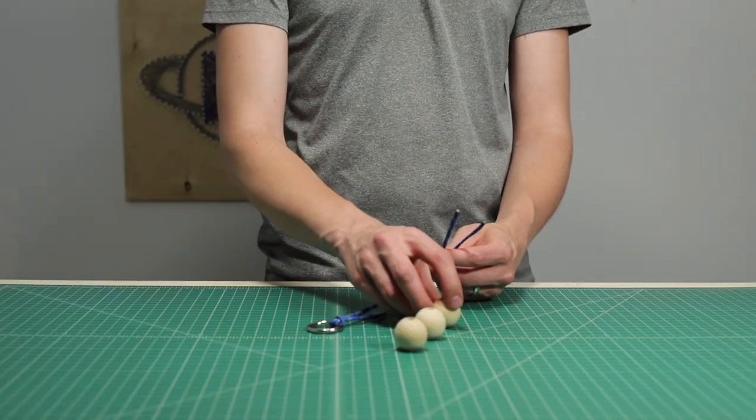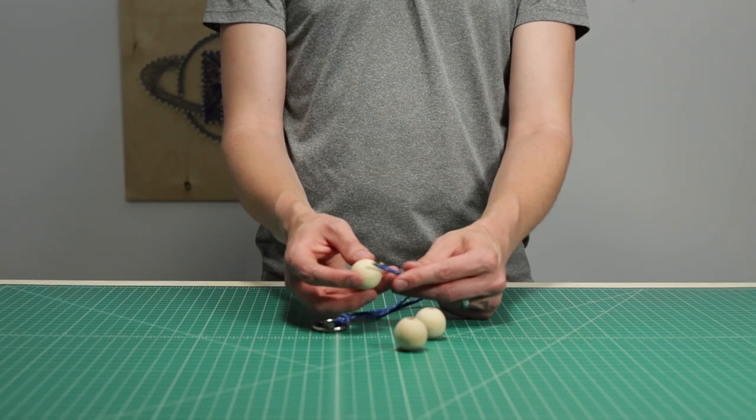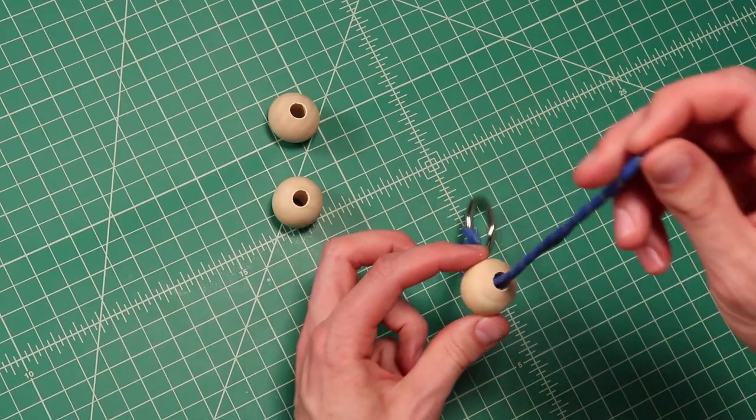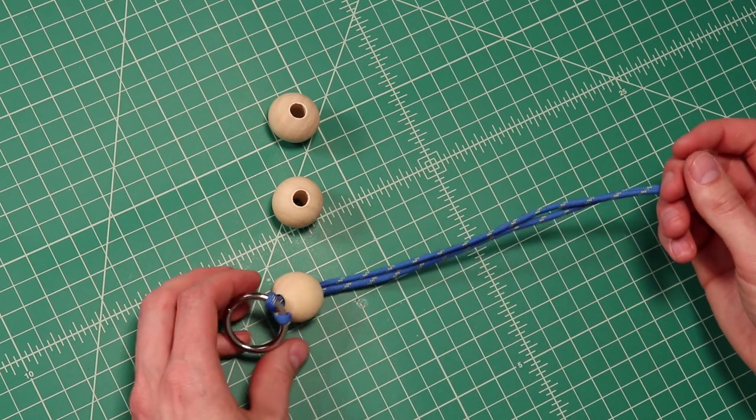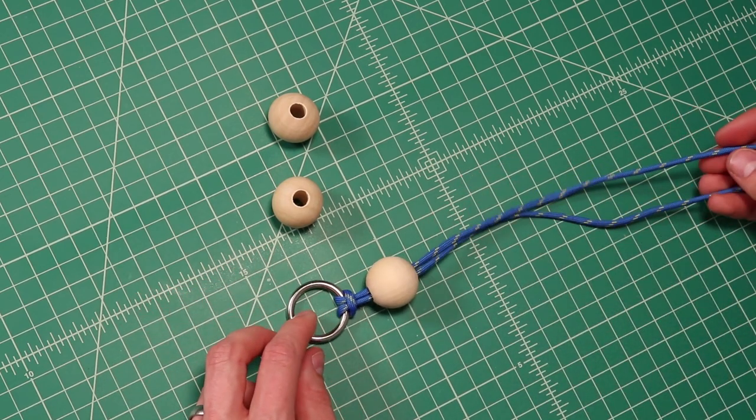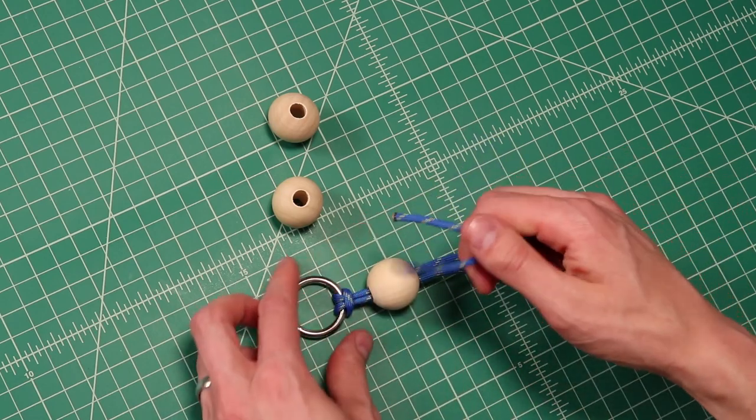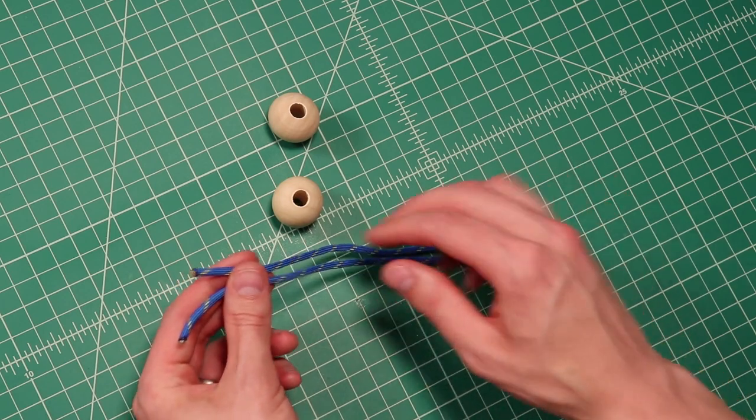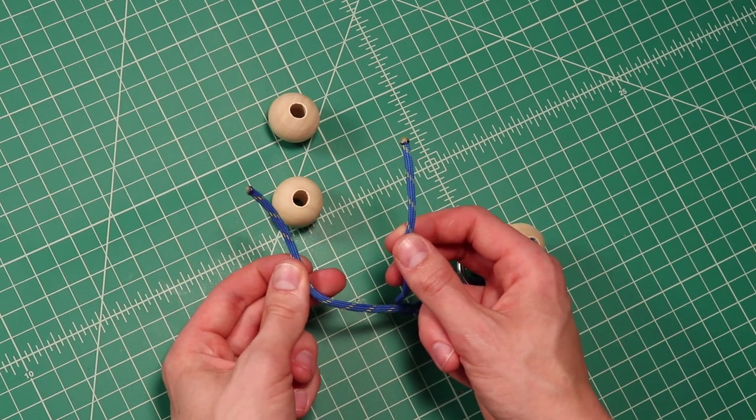After that, you're going to put one of the wood beads on both strings of paracord. Slide that up to your metal ring, and then you're going to put both of those ends of paracord back through your metal ring.